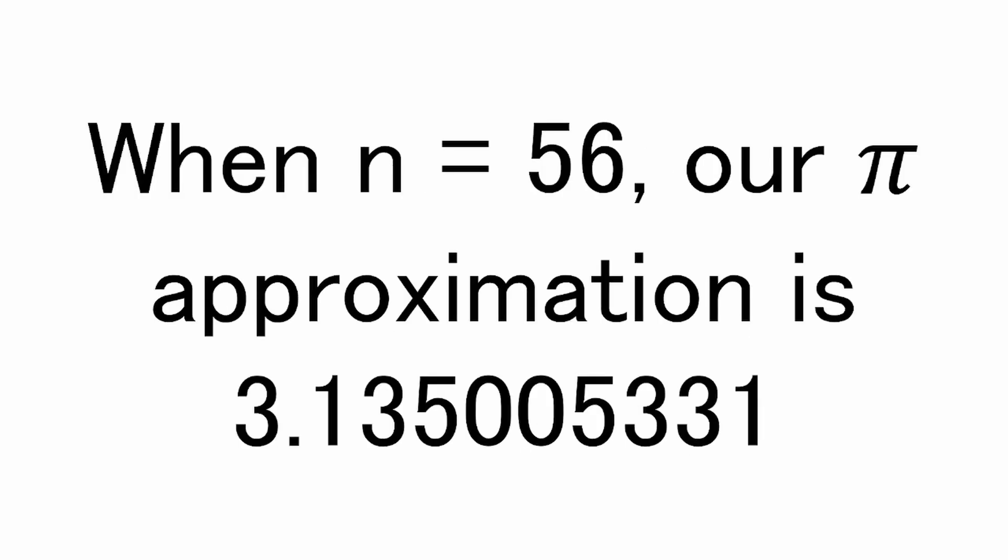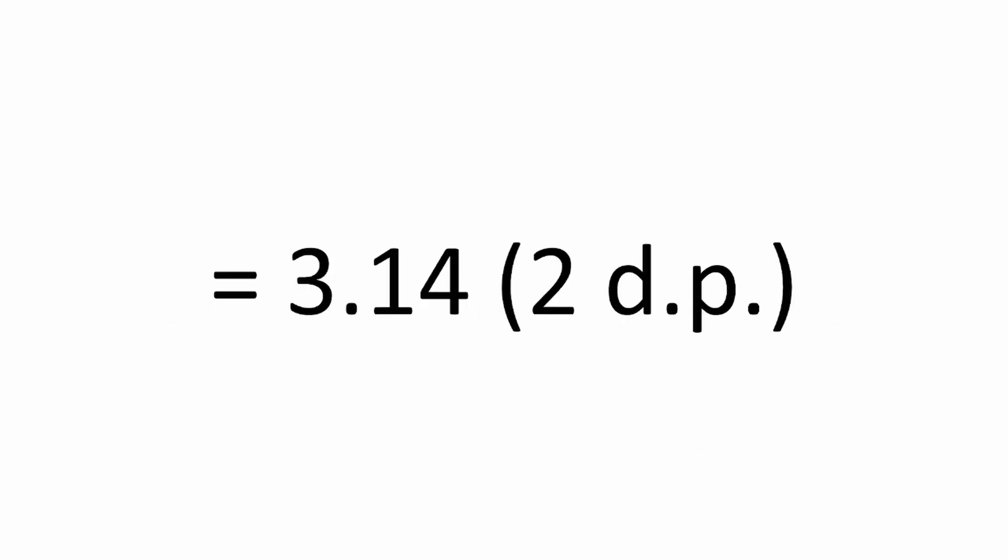If you're satisfied with pi correct to only 2 decimal places, then when n equals 56, our pi approximation is 3.135005331, so 3.14 correct to two decimal places. I don't have anything fun to say about the rest of these, I literally just sat and typed numbers into a calculator. The results are on screen.